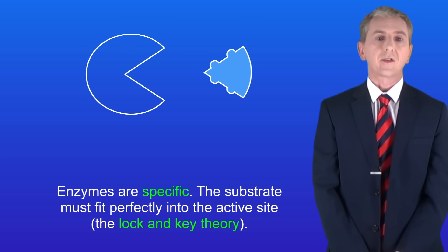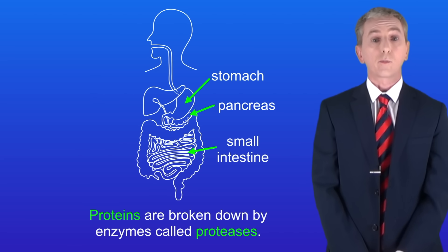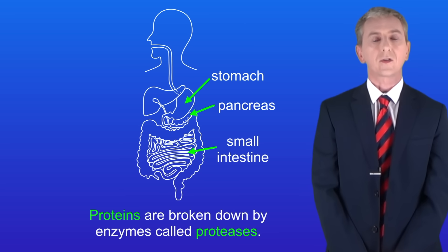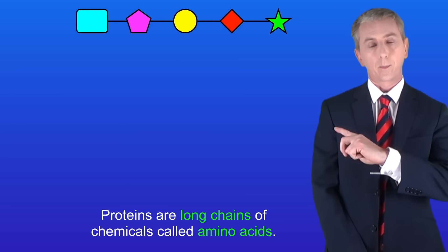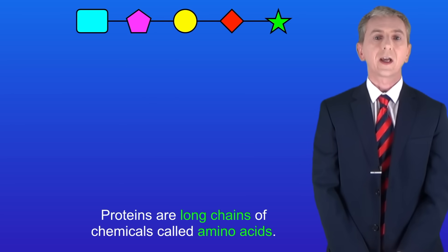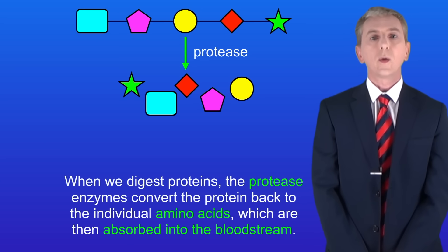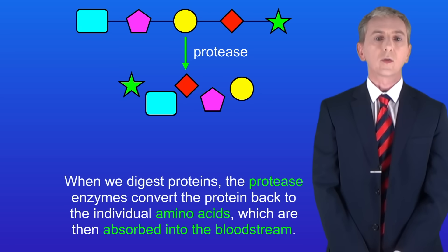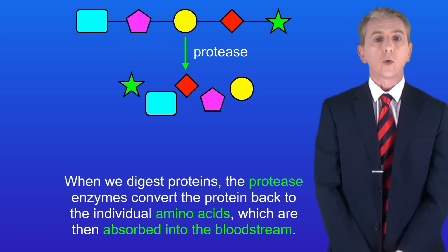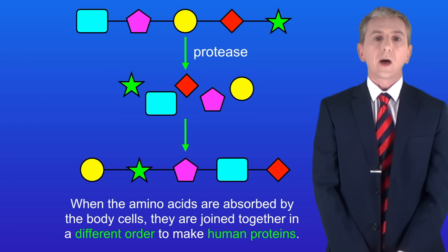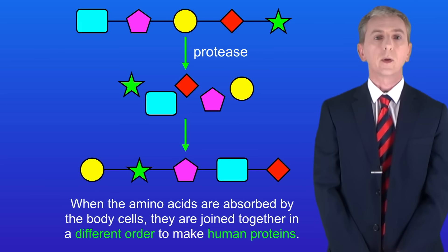Proteins are broken down by enzymes called proteases, and we find these in the stomach, the pancreatic fluid, and the small intestine. Proteins are long chains of chemicals called amino acids. When we digest proteins, the protease enzymes convert the protein back to the individual amino acids, which are then absorbed into the bloodstream. When the amino acids are absorbed by the body cells, they're joined together in a different order to make human proteins.